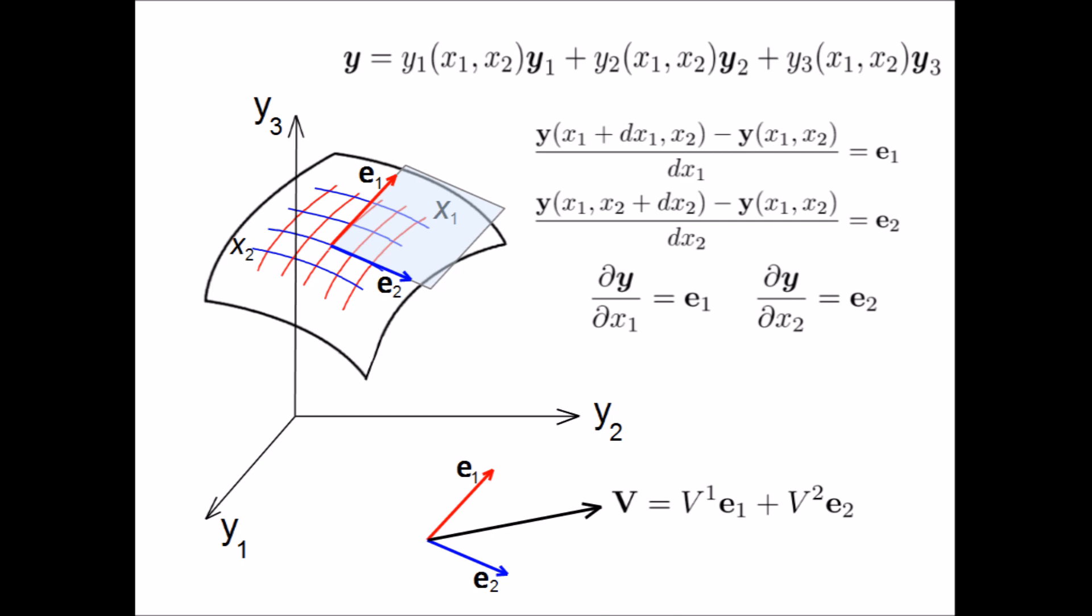If we were given e1 and e2 at every point on the surface, we could calculate any intrinsic property of the surface without ever stepping outside of it.